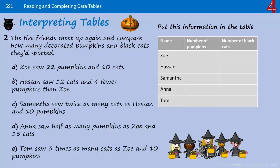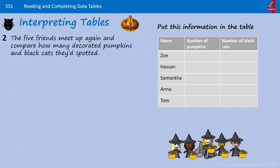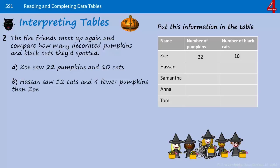You're going to put this information in the table and then work out the missing information. Pause the video and have a go. Starting with Zoe: she saw 22 pumpkins, so beside Zoe and beneath number of pumpkins we can put 22, and 10 cats, so we can put 10 beside Zoe under the number of black cats.